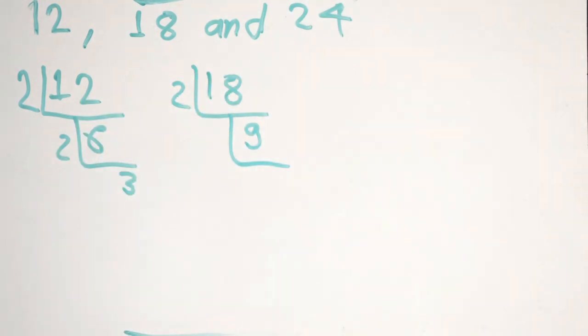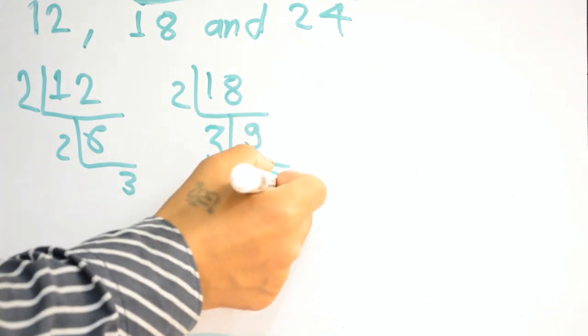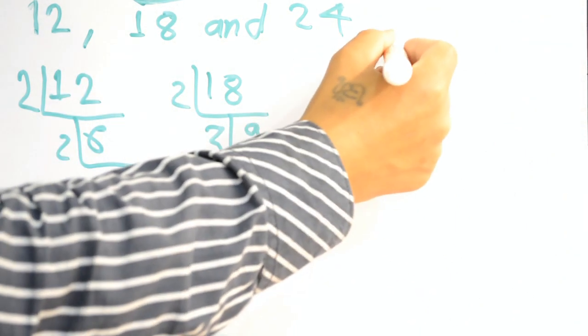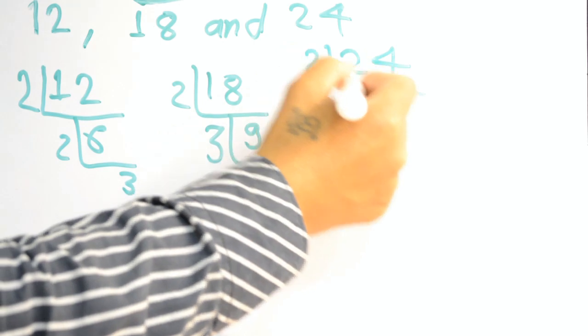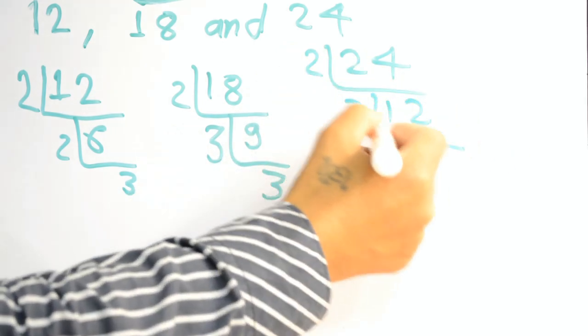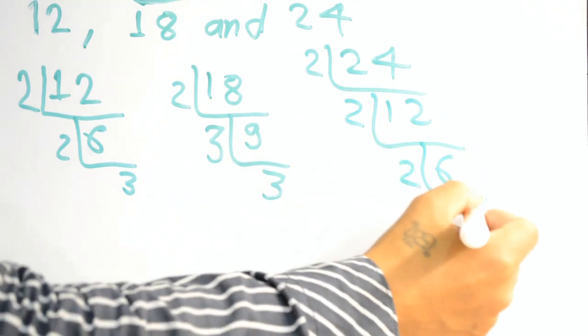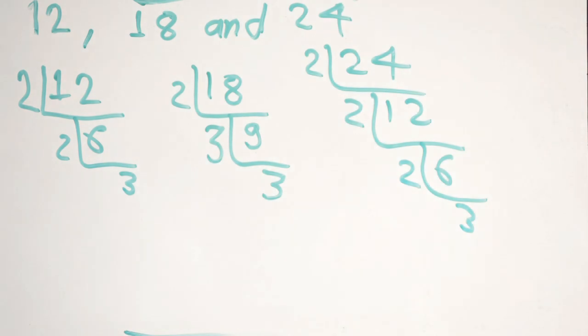18 is divisible by 2. 2 times 9. Then 3 times 3 are 9. For 24, it is divisible by 2. 2 times 12. Then 2 times 6. Then 2 times 3. Now we have all prime numbers here.